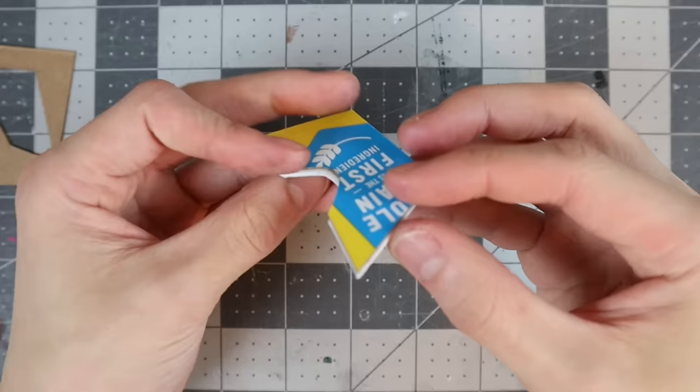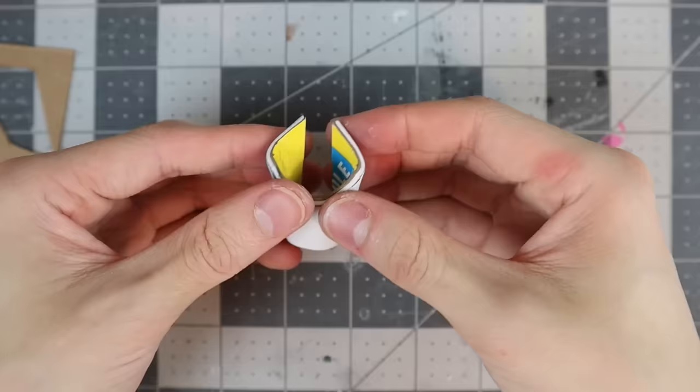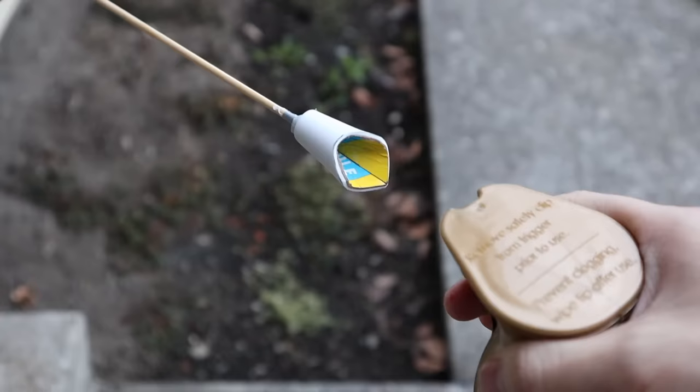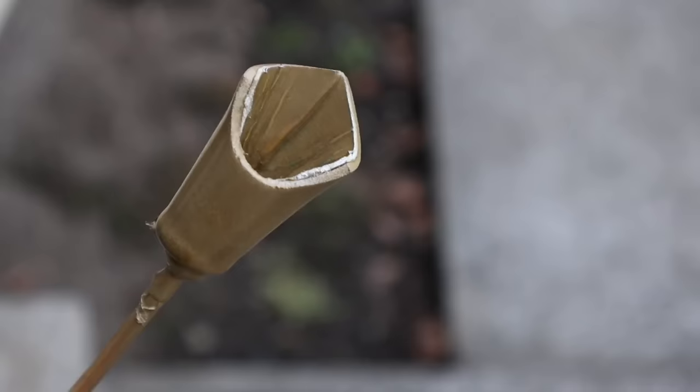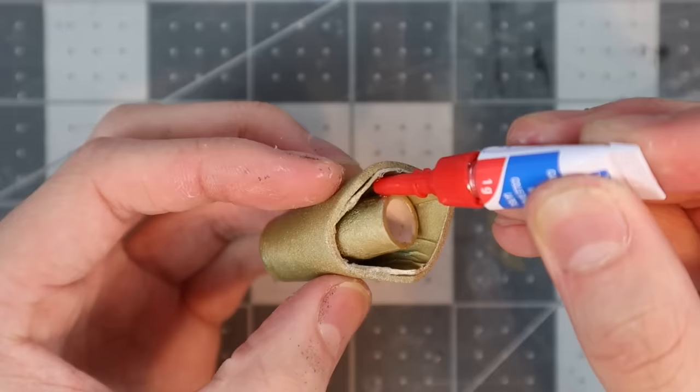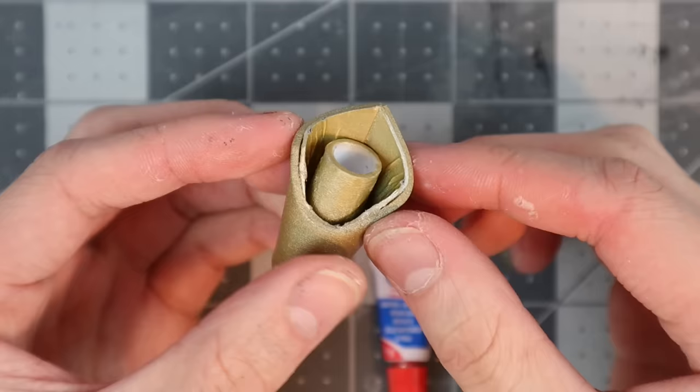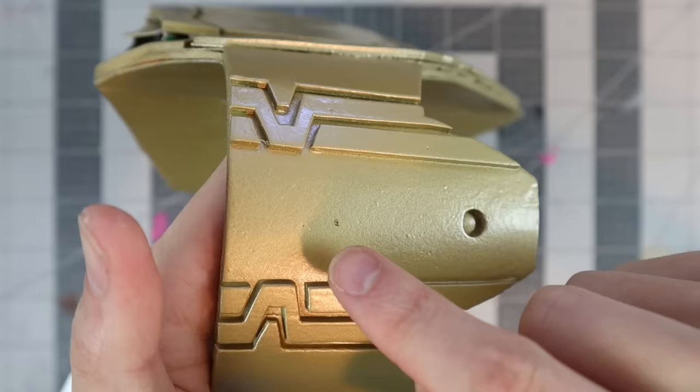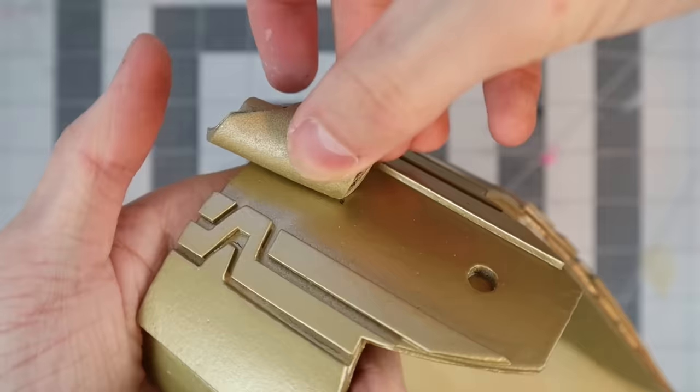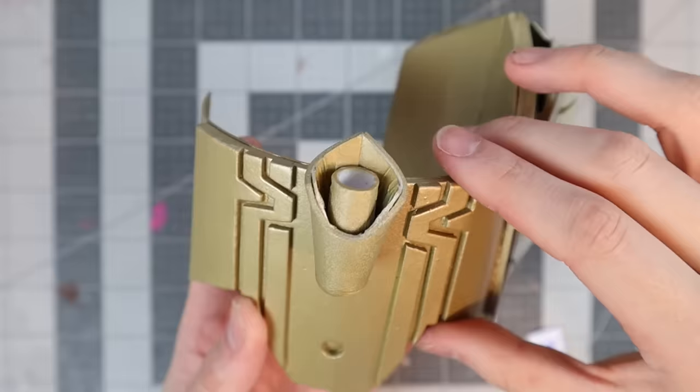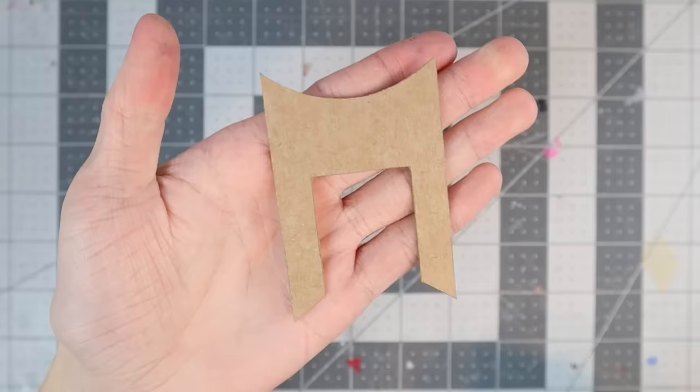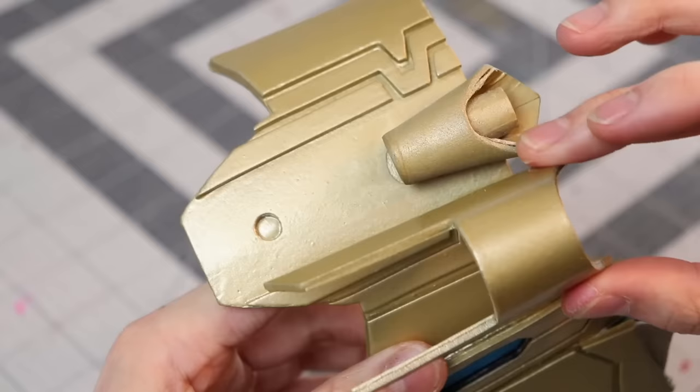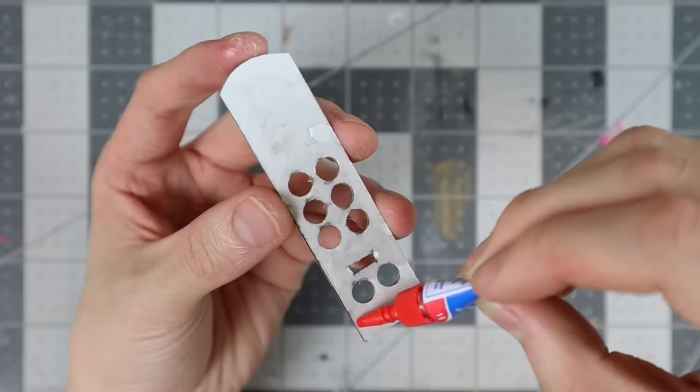Before we can glue the barrel onto the web shooter, we need to make this nozzle piece, which is going to wrap around the barrel. Once the paint on this dried, I slid the barrel into here, and glued those two pieces together. Now we can glue this entire piece to the web shooter, and I'm going to make a small 1 inch mark right here to indicate where I want this piece to be glued. The reason I'm doing this is because I don't want too much of the nozzle glued onto the web shooter, or else it'll end up sticking out the back. This piece right here is basically going to hold the web cartridge. Once that gets painted gold, I can glue that right there.